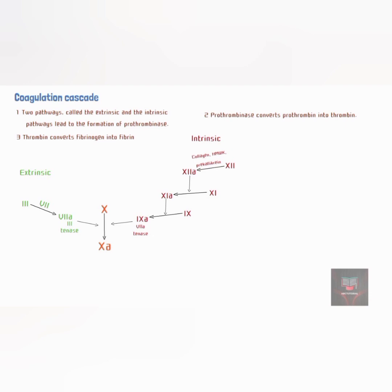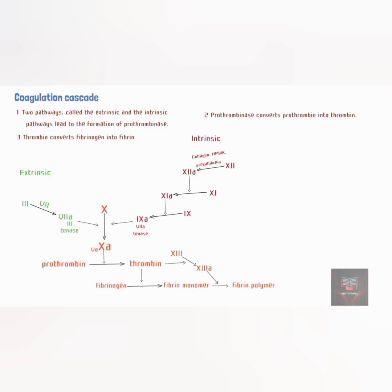Activated Factor X from both the extrinsic and intrinsic pathways acts together with co-factor activated Factor V as prothrombinase, which converts prothrombin to thrombin. This thrombin converts soluble fibrinogen to fibrin monomer, which is a weak fibrin thread. Thrombin also activates Factor XIII, which causes the polymerization of fibrin monomer to fibrin polymer, which is strong and forms effective clots at the site of injury.